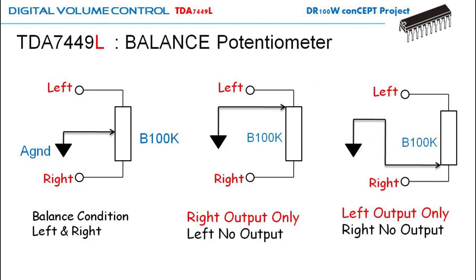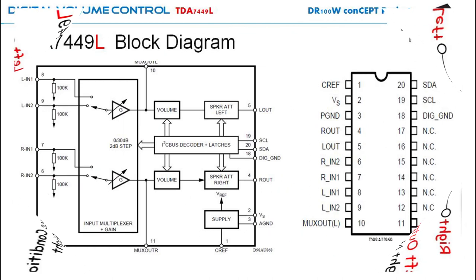We can see this in a more popular potentiometer balance control based on the wiper arm. When the wiper arm is at the middle, the left and right channel are in balance. When the wiper arm is on the top, the right channel is dominant and the left may have no output. When the potentiometer is on the bottom side, the left channel is dominant with minimum output from the right channel.